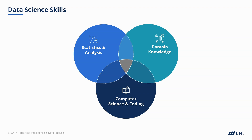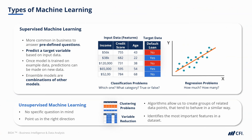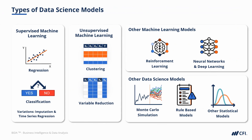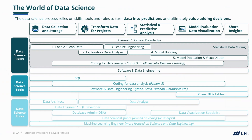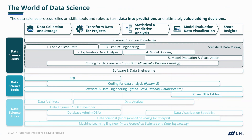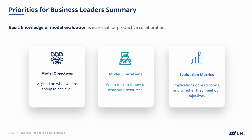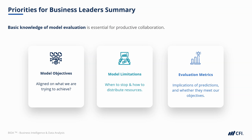We started off by looking at those three skills which come together to form data science. We looked at the various types of machine learning — classification, regression, and unsupervised machine learning — before exploring what else is out there beyond machine learning. We saw how data science skills, tools, and roles come together to solve these problems, and how it's important for business leaders to have a basic understanding of data science methodologies.